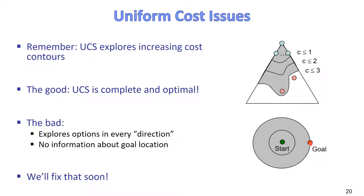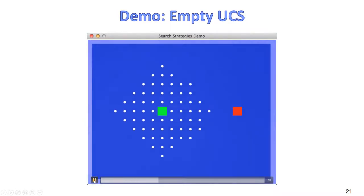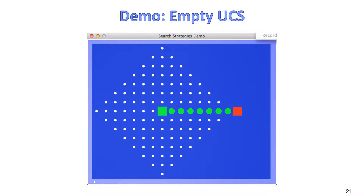Here is a demo of how Uniform Cost Search works on an empty grid, going from one state to another. What happens is that UCS explores the entire space in many directions — not the entire space, but it explores in all directions until it hits the goal. It eventually finds the optimal solution but takes a long time exploring many other states first.